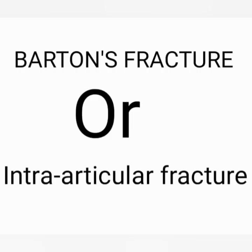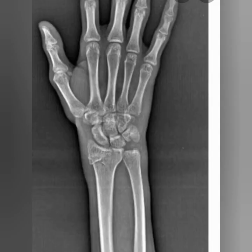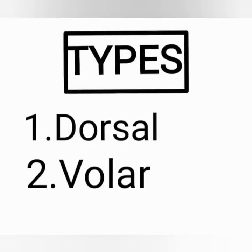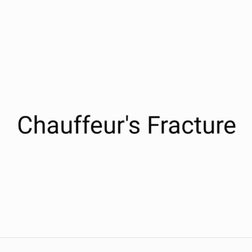Next is Barton's fracture. It is an intra-articular fracture of the distal radius with dislocation of the radiocarpal joint, as you can see in the picture. There are two types: dorsal or volar fracture. This fracture happens when a patient falls on an extended or pronated wrist.